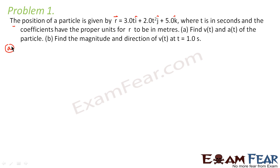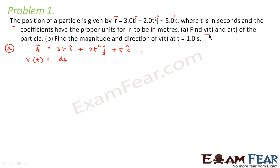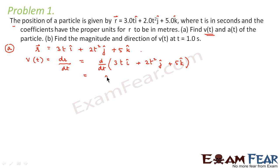Let us look at the first part. We have r = 3t i-cap + 2t² j-cap + 5k-cap. We have to find out instantaneous velocity, which is dr/dt. So dr/dt = d/dt of (3t i-cap + 2t² j-cap + 5k-cap). Differentiating, we get v(t) = 3 i-cap + 4t j-cap. This is the velocity at any instant of time t.